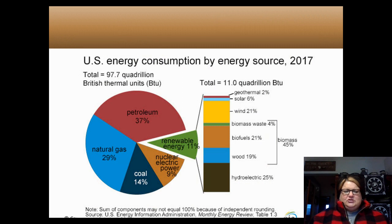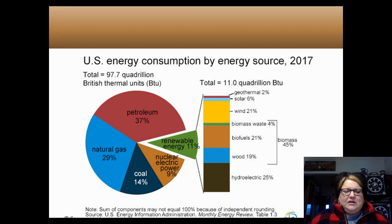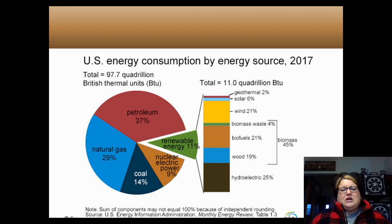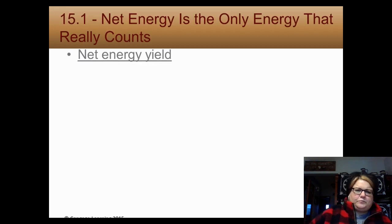First I want to talk about energy use in general. This is as of 2017, the most recent information I could find. Look at how we use our energy — petroleum, natural gas, and coal. The old data from 2012 had coal at 28%, so we used to get about a third of our energy from coal; now we're getting 14%. Emissions have dropped because we're switching to natural gas and petroleum, nuclear power is about the same, and renewables are going up.